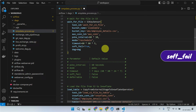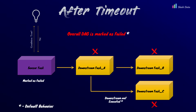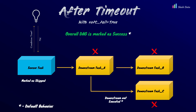Next, we have soft fail. This parameter is related to the timeout we just discussed. If you don't specify soft fail, the sensor will fail after the timeout period, causing the overall DAG to fail. However, when you set soft fail to true, after the timeout period, the sensor task is just marked as skipped, and the overall status of the Airflow DAG is marked as a success.